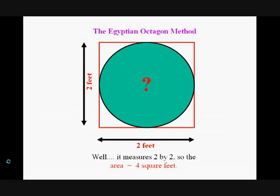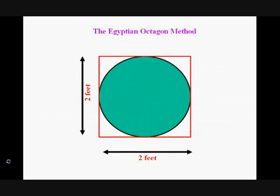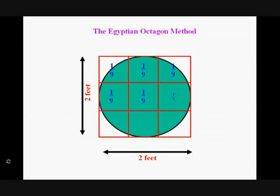We divide the square into 9 equal smaller squares, sort of like a tic-tac-toe game. Note that each small square is 1 ninth the area of the large one. We'll use that fact later.